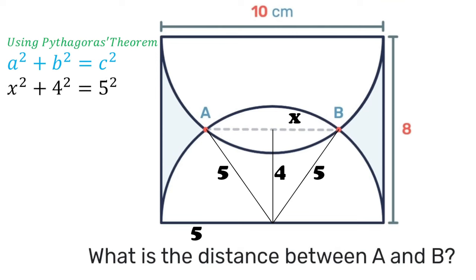When we square the 4 we get 16 and when we square the 5 we get 25. Transposing the 16, we'll subtract that from 25 which gives us 9. So if x² is 9 then x will be the square root of 9 which is 3.